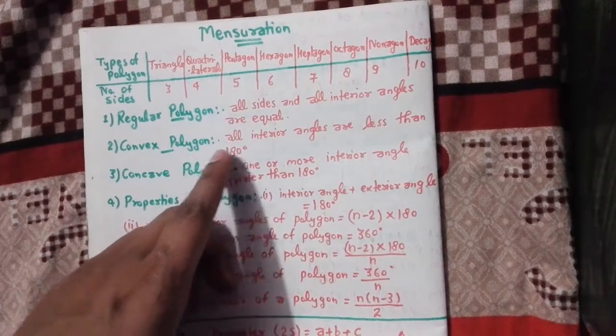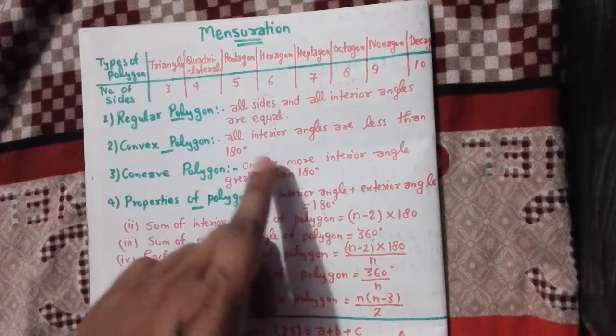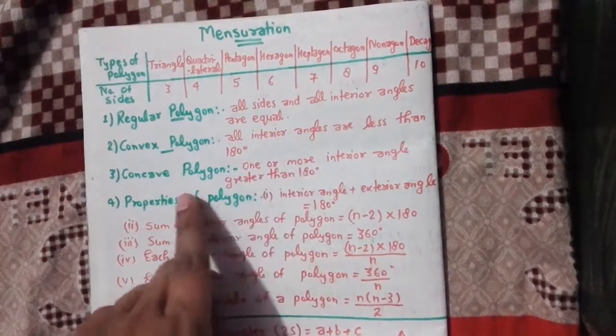Regular polygon: all sides and all interior angles are equal. Convex polygon: all interior angles are less than 180 degrees.